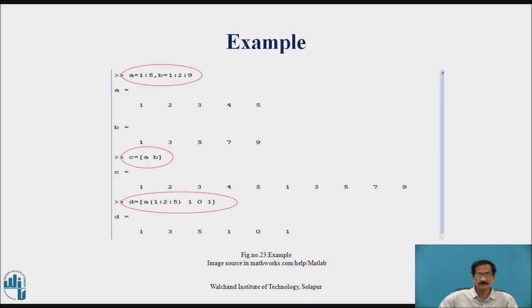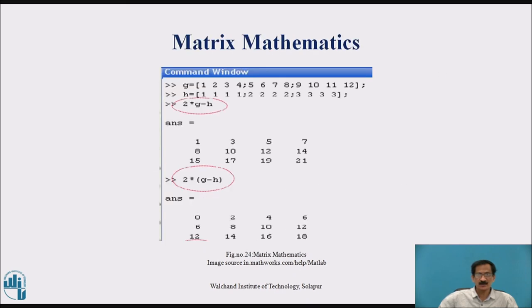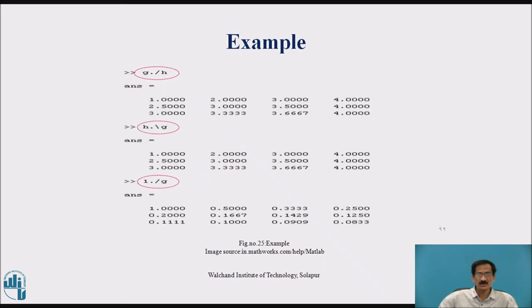This is the example matrix mathematics: matrix 2 into G minus H, 2 into bracket G minus H, 2 into bracket G minus H. This is the example.